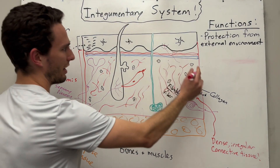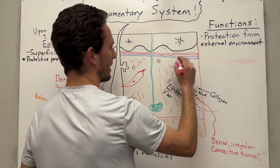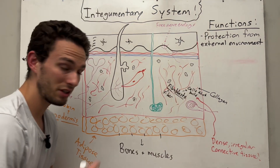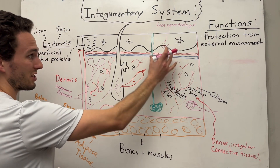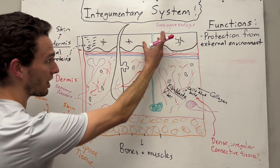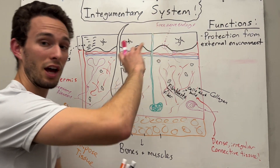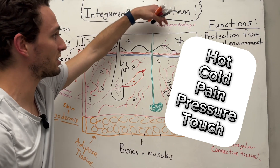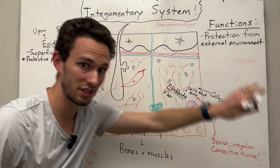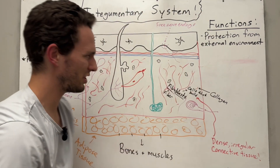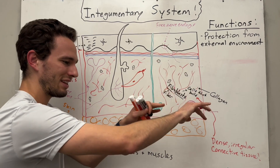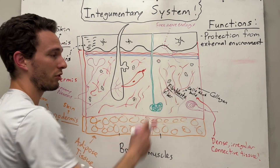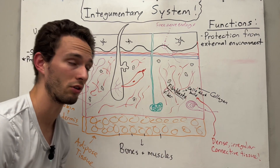Let's start with the easy ones. Up here we have free nerve endings. They are very high up in the epidermis and dermis, and they're actually going to detect hot, cold, pain, pressure, and touch that may touch down on your skin. Usually this is more for fine touch — like things brushing up against your skin.